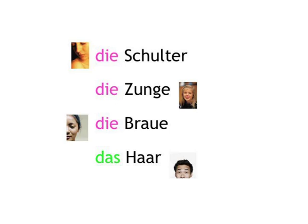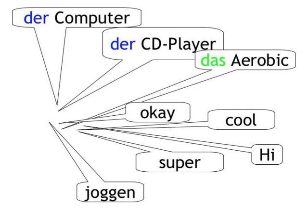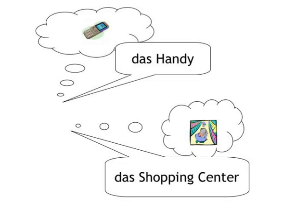Modern language trends are another benefit to English-speaking learners of German. English has become very trendy worldwide, so a lot of English words have been introduced into German over the last 30 years or so: der Computer, der CD Player, das Aerobik, okay, cool, super, joggen, hi — just a few of them. And then we've got fake English words like 'das Handy' for mobile phone, or 'das Shopping Center' for supermarket.